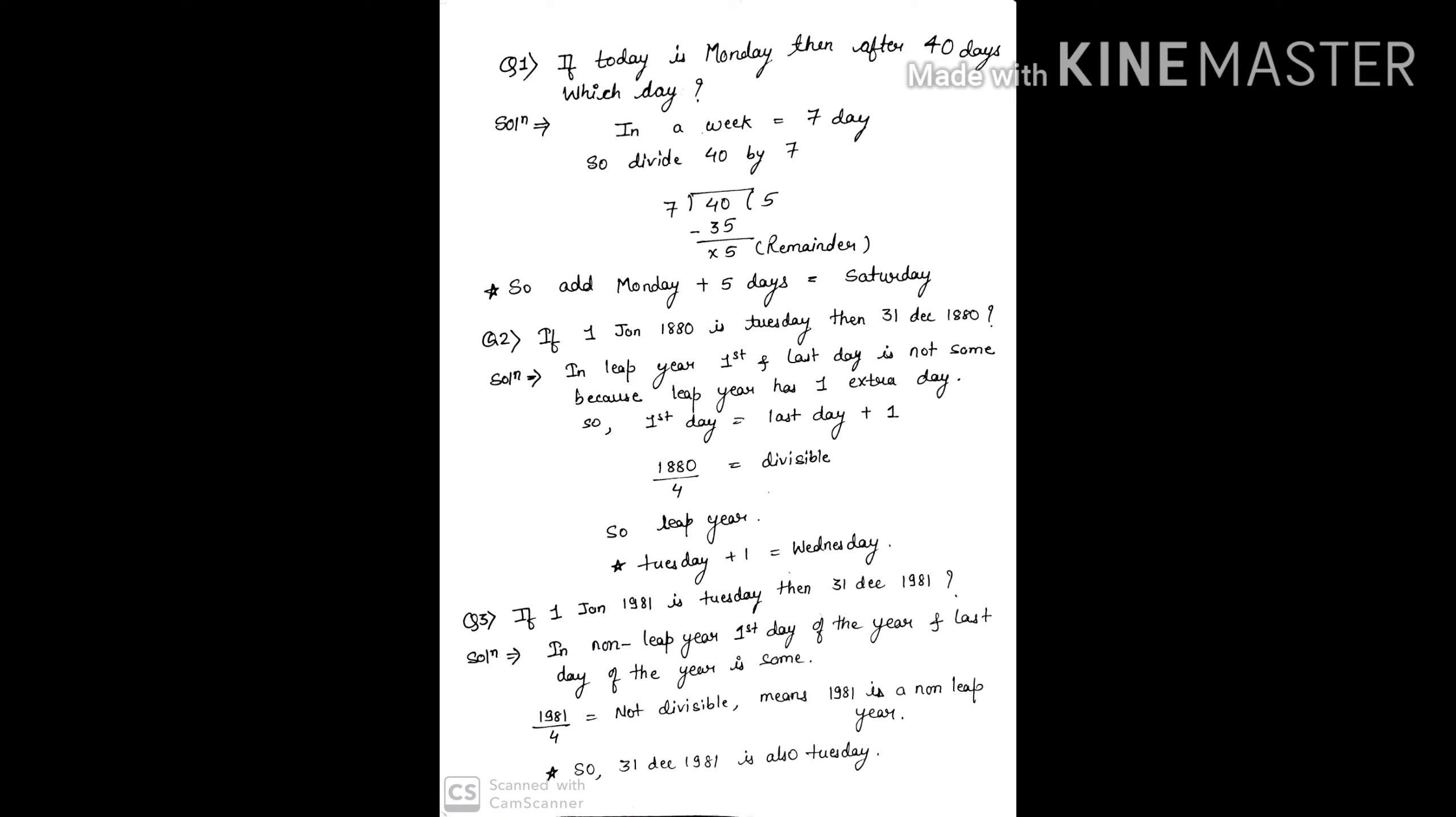Now to check whether 1981 is a leap year or not, we will divide it by 4. So it is not divisible, means 1981 is not a leap year, it means it's a non-leap year. So according to the rule, 31st December 1981 is also Tuesday.